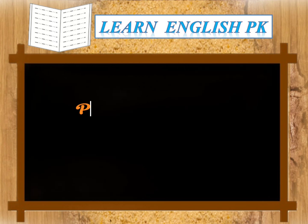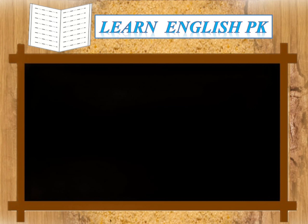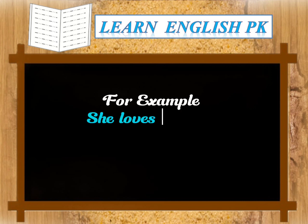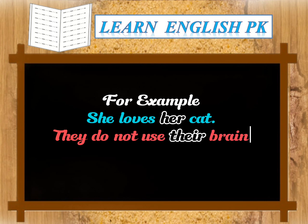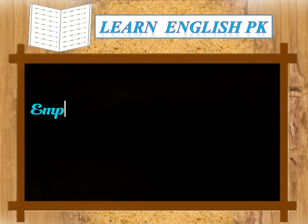Possessive adjectives show possession. For example: She loves her cat. They do not use their brain. I cannot give you my book.